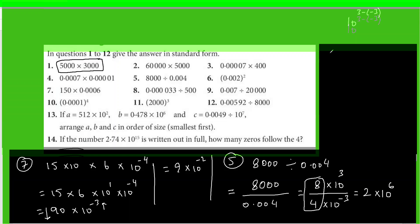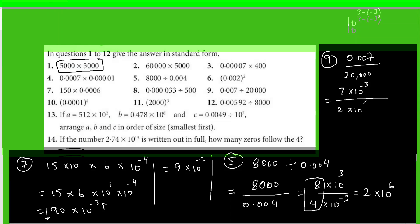Question 9: 0.007 divided by 20000. Write 0.007 as 7×10⁻³ and 20000 as 2×10⁴. Seven divided by two is 3.5, and the powers are subtracted: minus 3 minus 4 gives minus 7. The answer is 3.5×10⁻⁷.